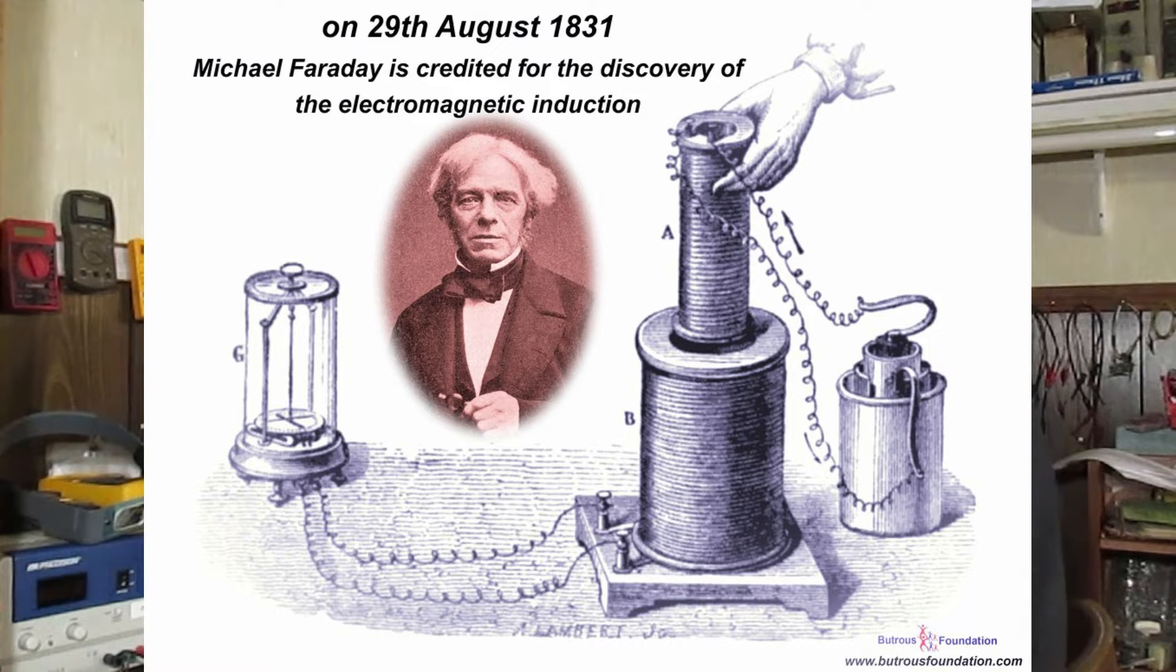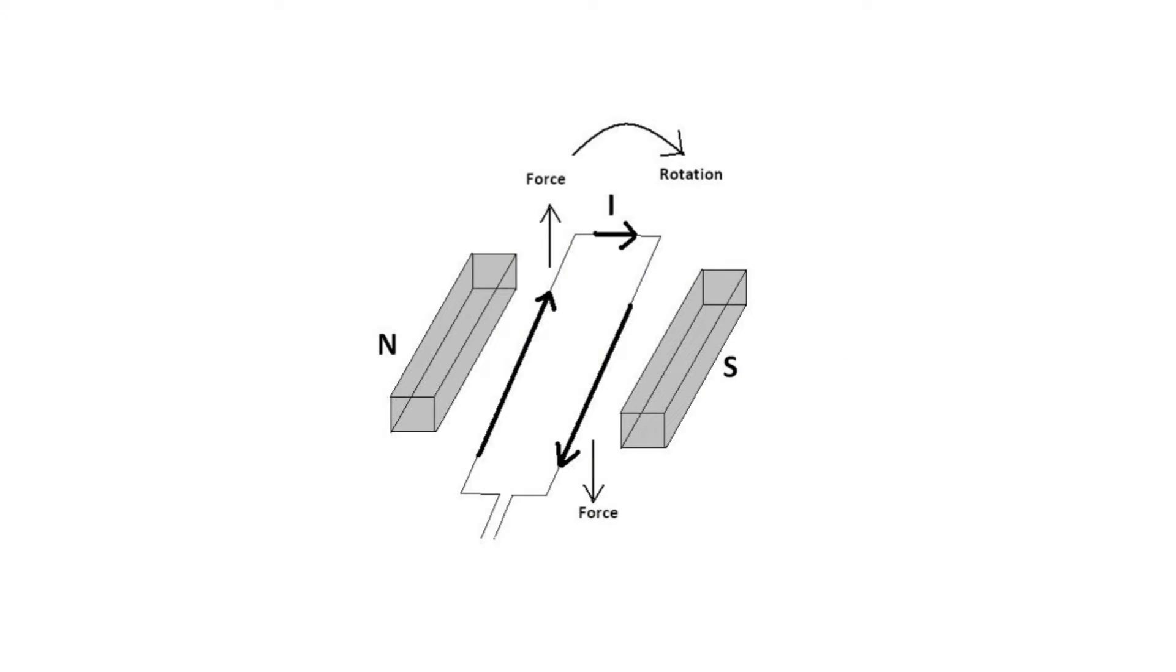Motors operate on the principles discovered by Faraday, when he discovered that current running through a wire has a force exerted on it next to a magnet. When current flows through a loop of wire in the presence of a magnetic field, a force is exerted which will allow it to rotate.